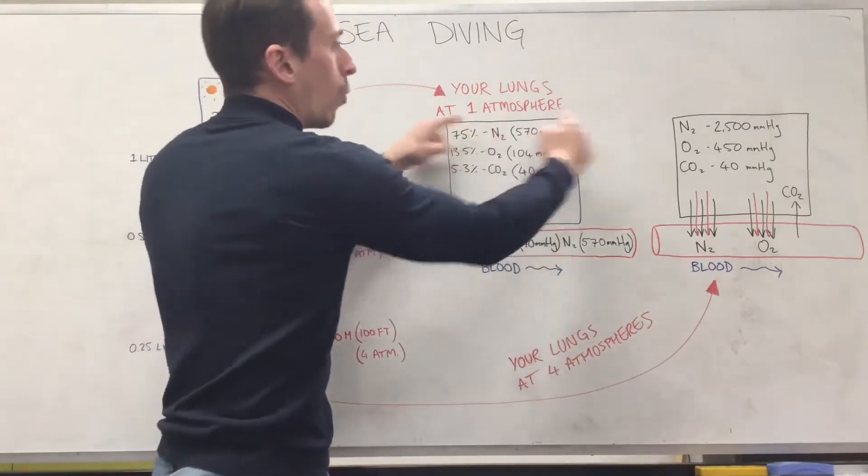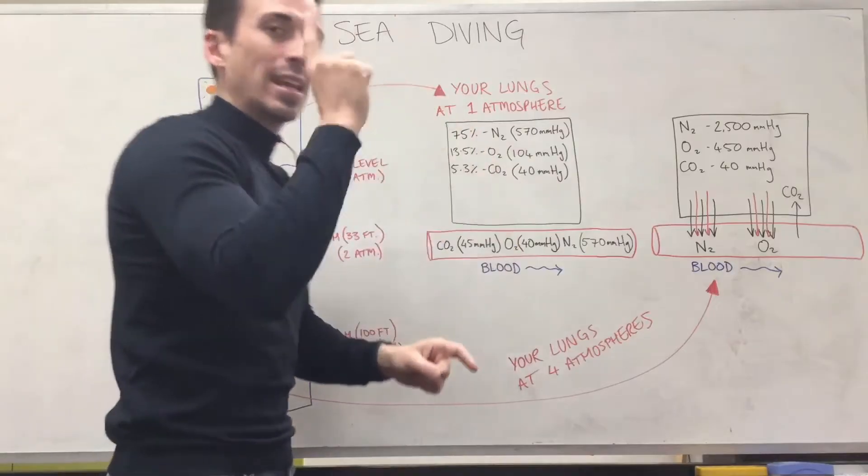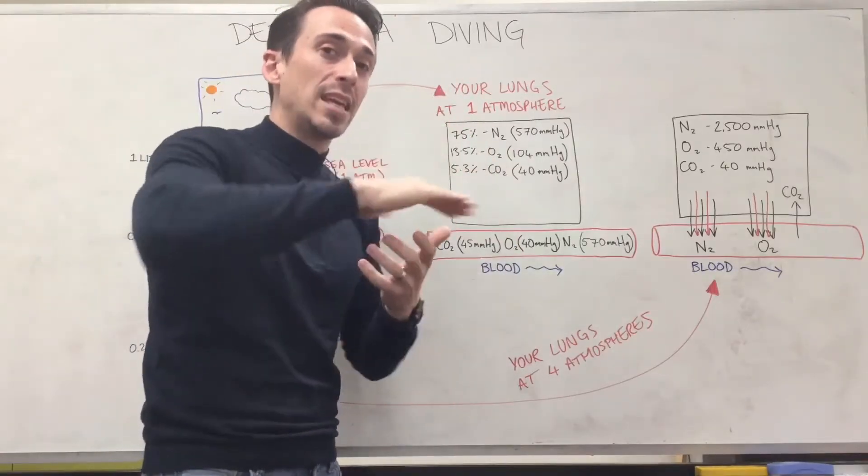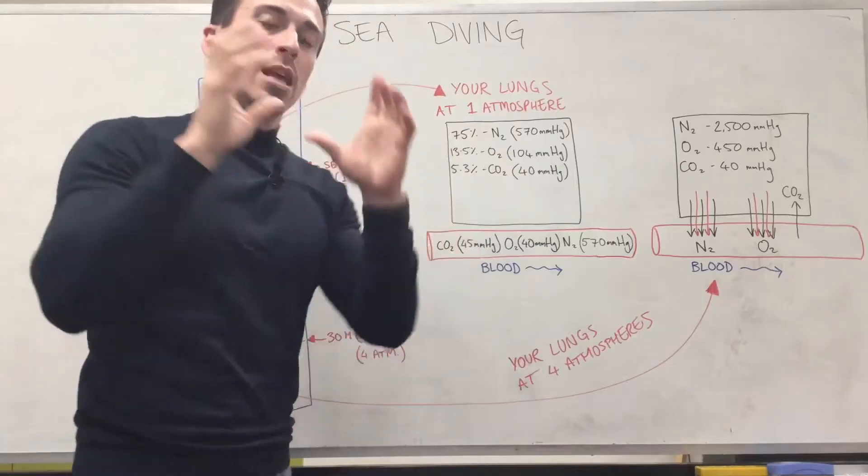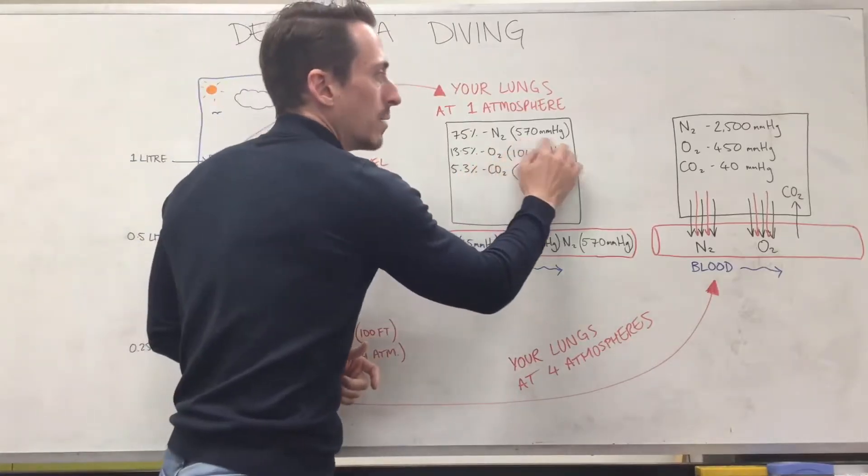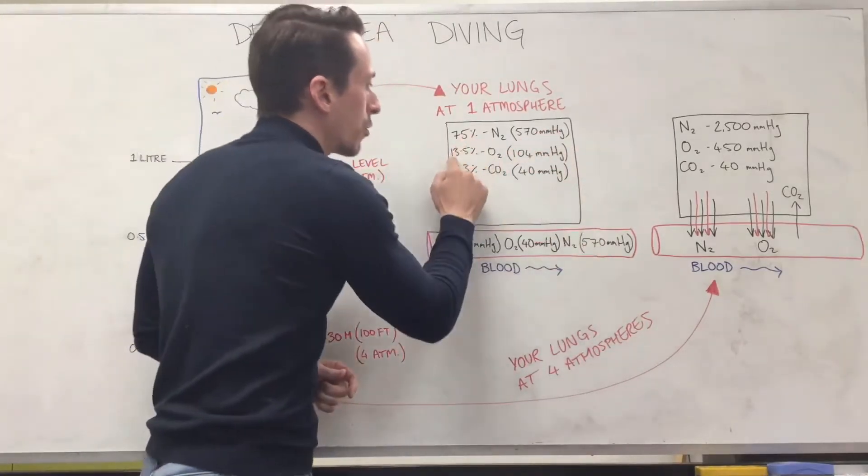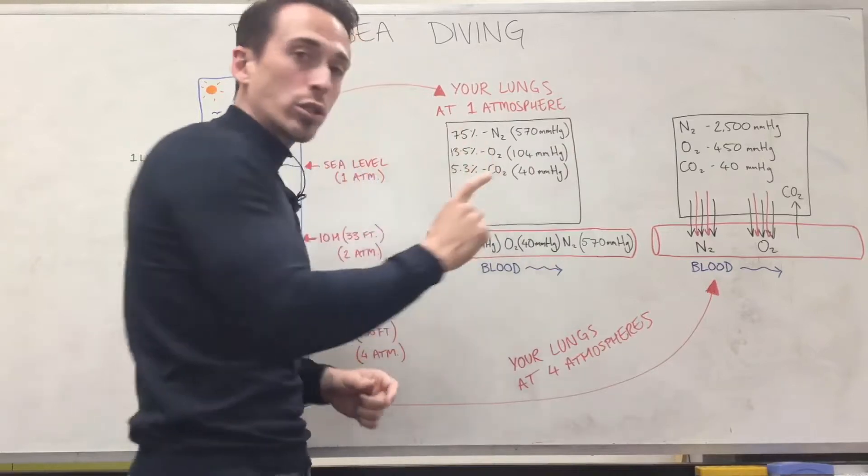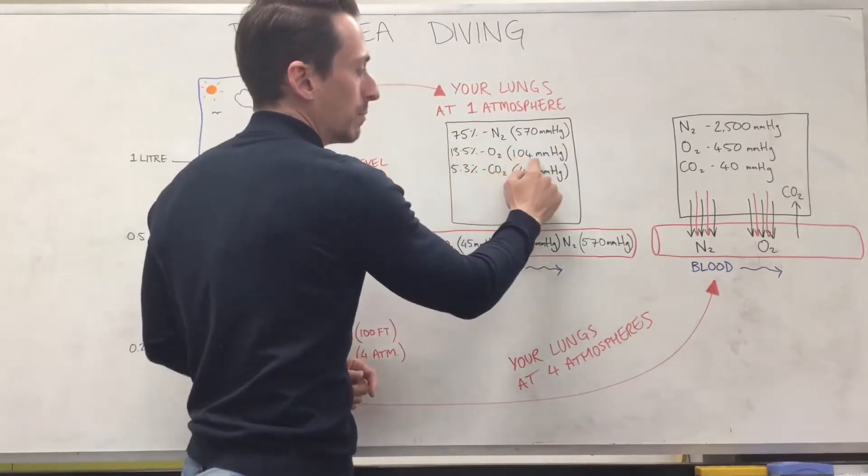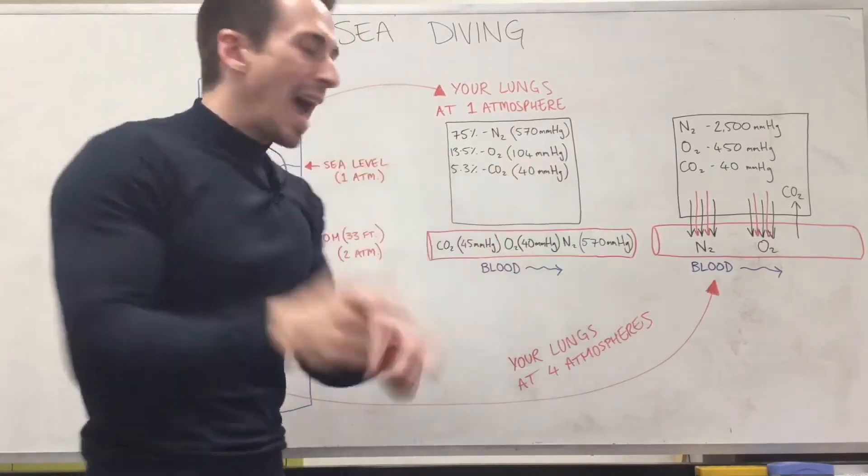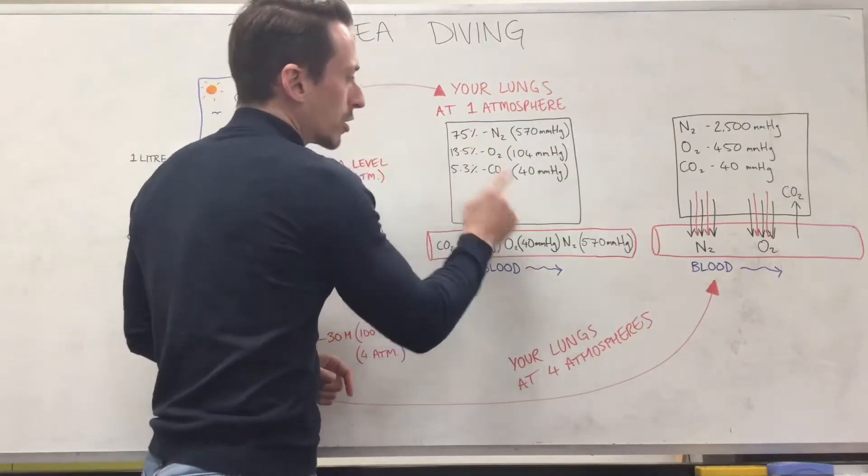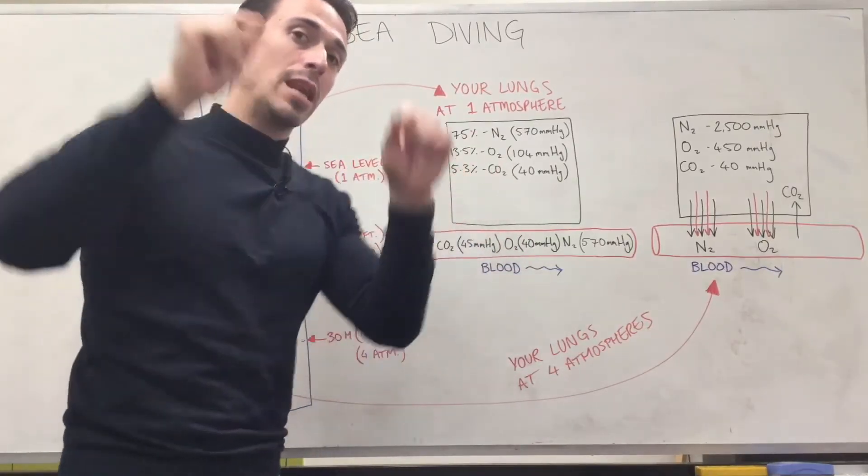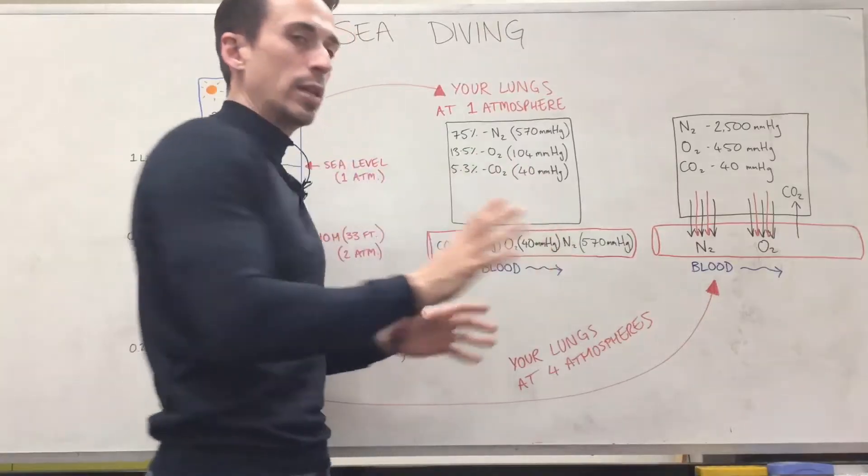So we've got that one litre box right at a single atmosphere, so we're at sea level, and it's 75 percent nitrogen. The pressure is 570 millimeters of mercury. We have 13.5 percent of it being oxygen, and the pressure is 104 millimeters of mercury. The carbon dioxide percentage is 5.3 percent and the pressure for that is 40 millimeters of mercury.